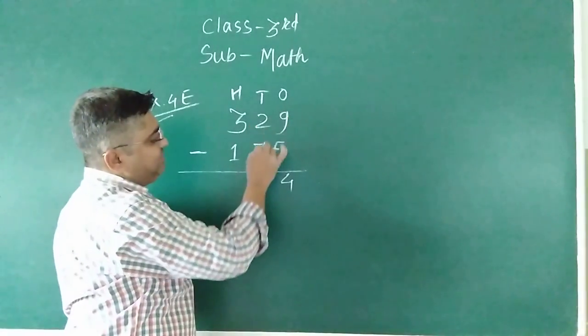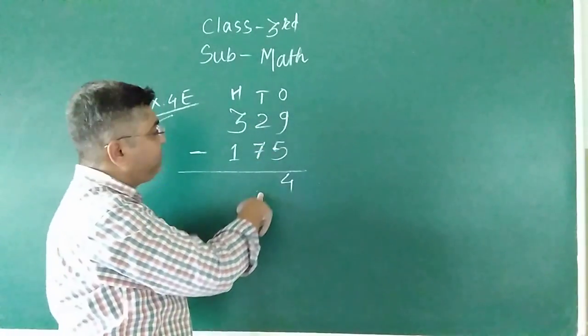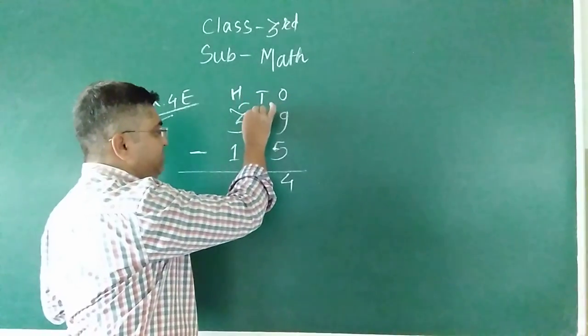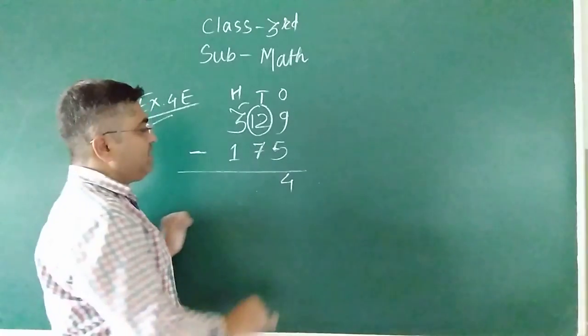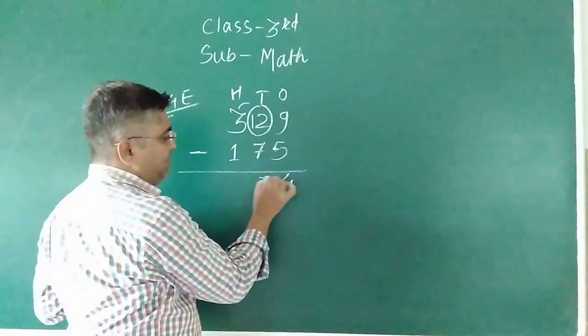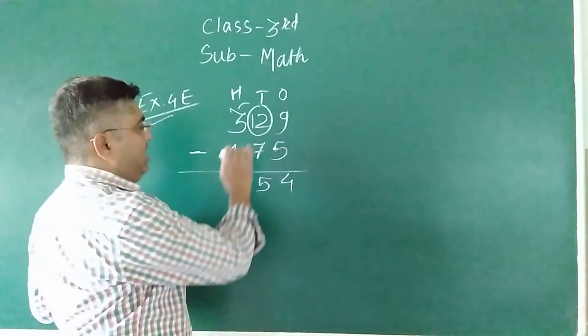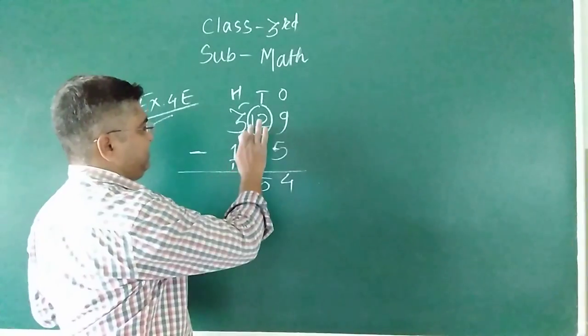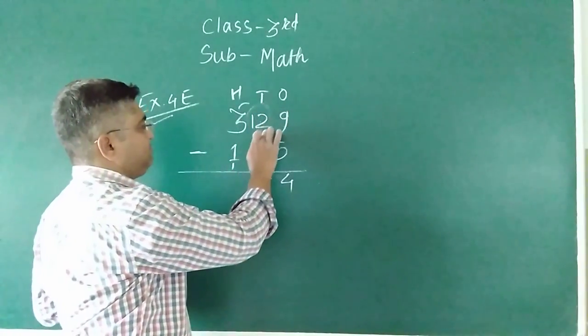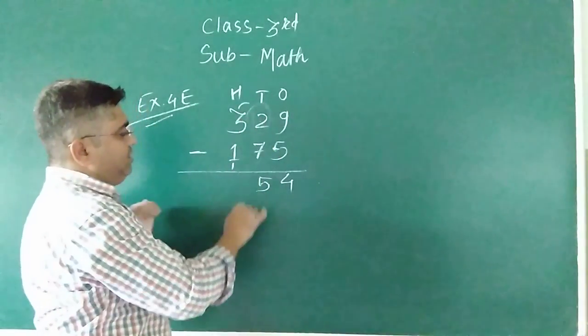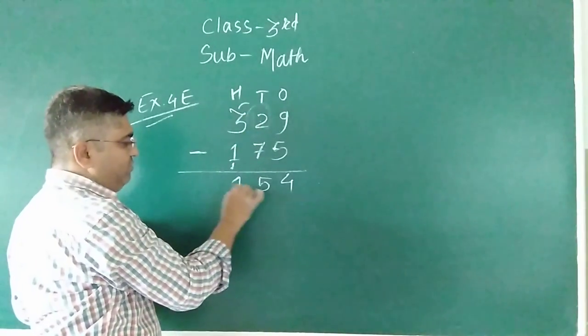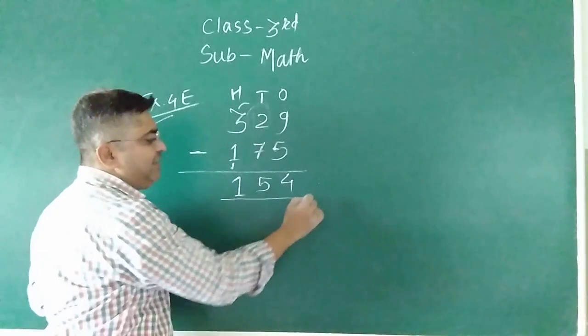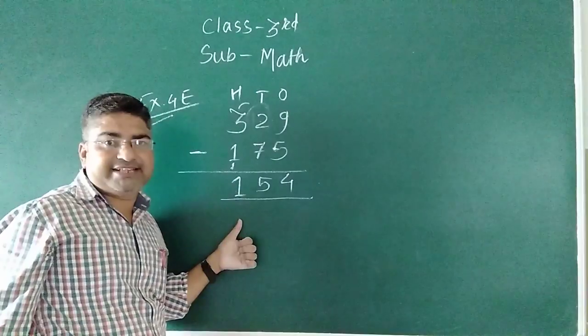2 minus 7 is not possible, then we can regroup it. Means we are carrying this, so it becomes 12. 12 minus 7 is 5. Again, return it. 3 minus 2 is 1. So what is the answer? 154, this is our answer.